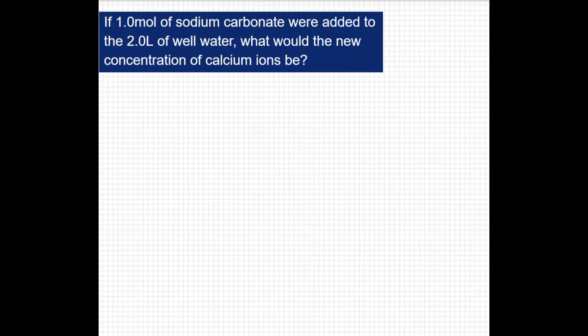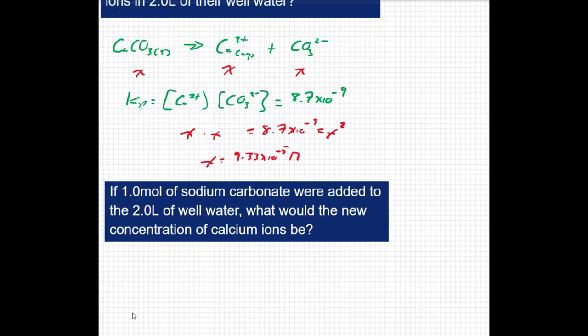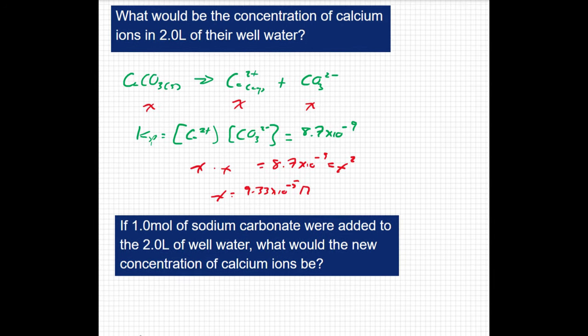To understand what happens when we add sodium carbonate to the well water, let's remind ourselves what we did previously, when we just had calcium carbonate in the well water. We showed the dissolution of calcium carbonate into calcium ion and carbonate ion. And I see now that I actually forgot to write a double arrow when I wrote this earlier, because this reaction is indeed reversible, which led to our equilibrium work that we did below.